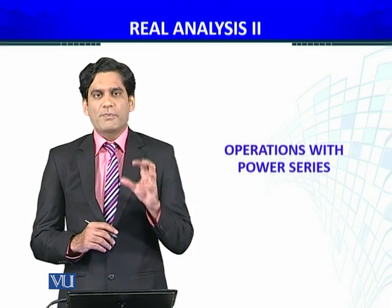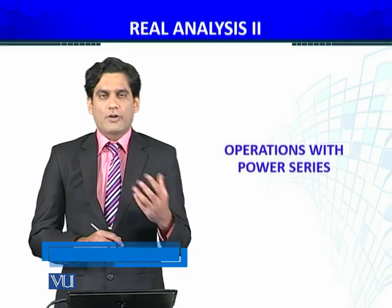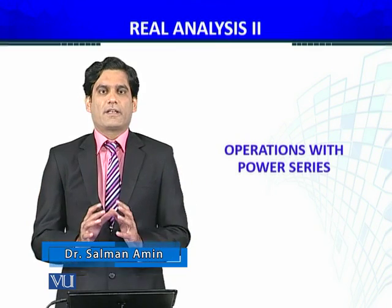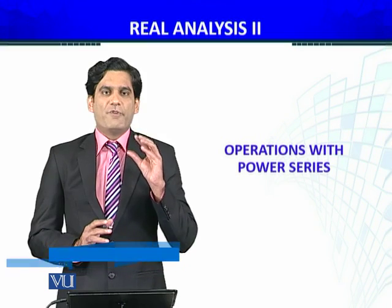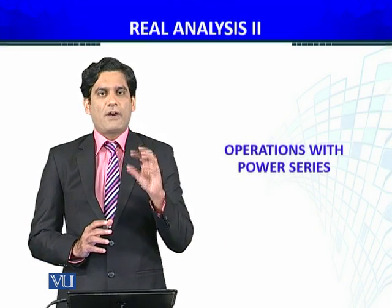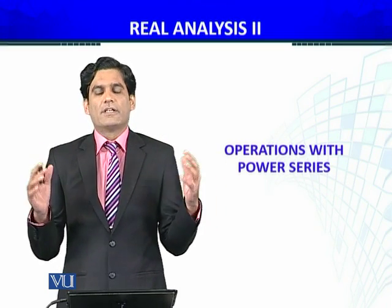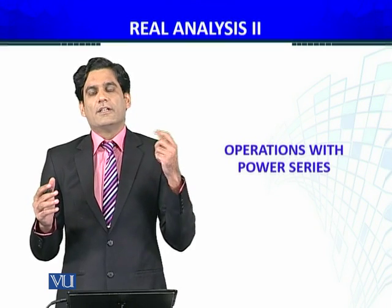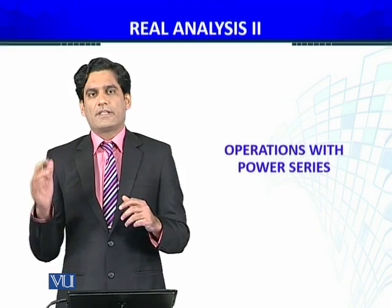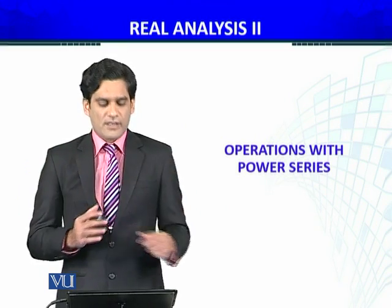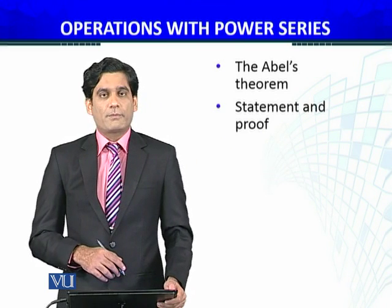at the endpoints, whether the power series will be convergent or divergent, we will specify this. We will state and prove, under what conditions, the power series will be convergent at the endpoints — the left or right endpoint of the interval. If R is the radius of convergence, then x₀ minus R is the left endpoint and x₀ plus R is the right endpoint. This is Abel's theorem. We are going to state and prove Abel's theorem.